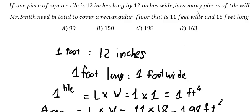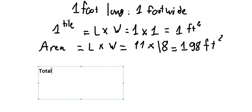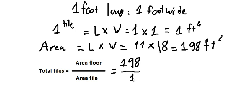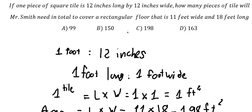If you want to find how many pieces of tile, we need to find the total area of the floor and divide by the area of the tile. So that's 198 divided by 1, which gives us 198, and the answer is C.